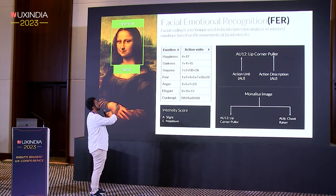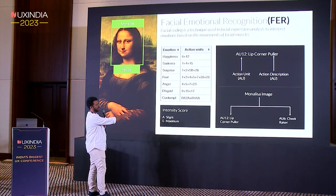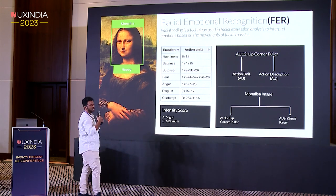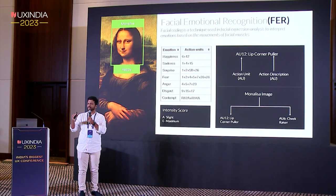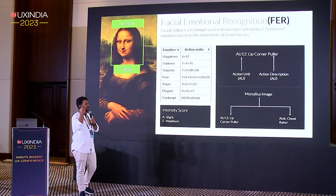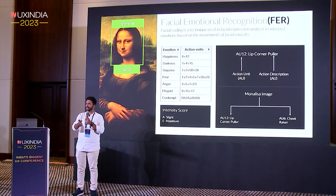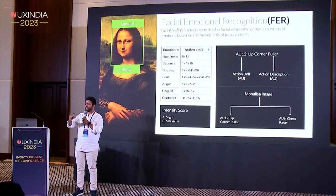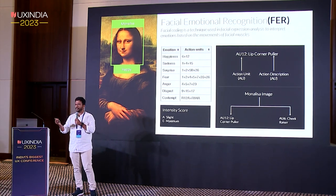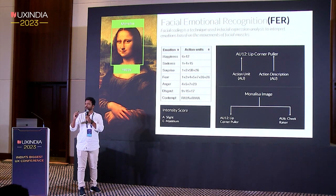Take for example the image on the left — it's the Mona Lisa. Two aspects are the lip corner puller and cheek raiser; you can see the cheeks being raised. These are called action units, and action descriptions describe the facial muscle movements. If you are happy — say you get an increment or win a million-dollar lottery — that represents a happiness scale. Based on different levels of happiness, there is an intensity score that defines how happy you are. That's how the facial coding system works.